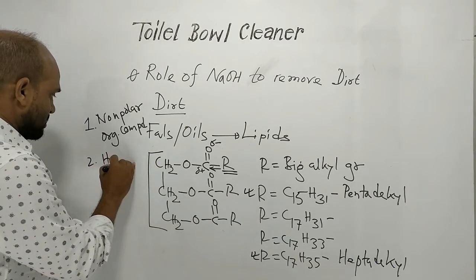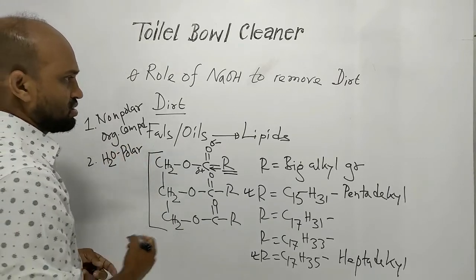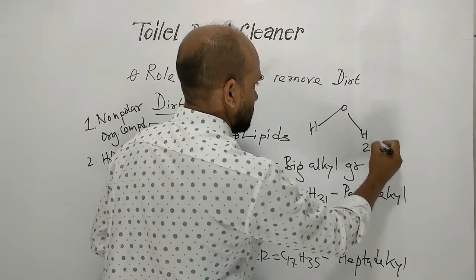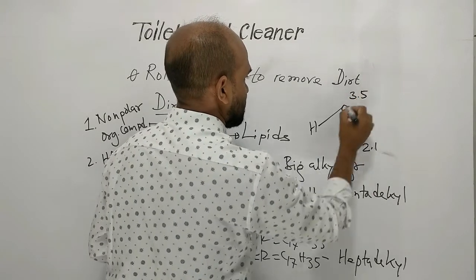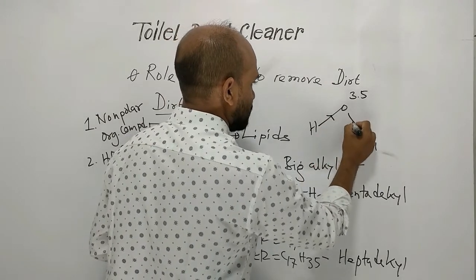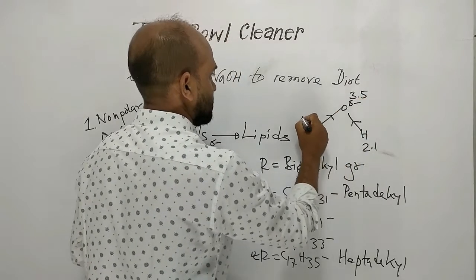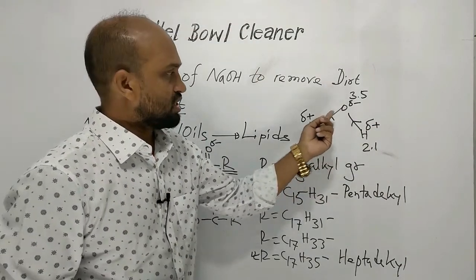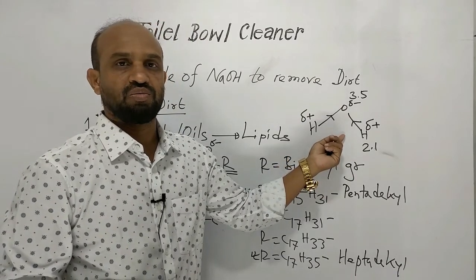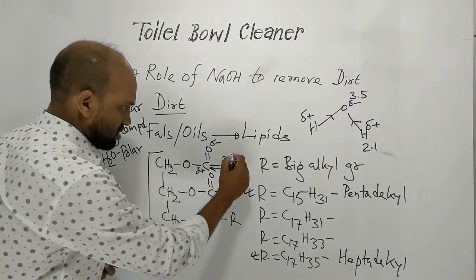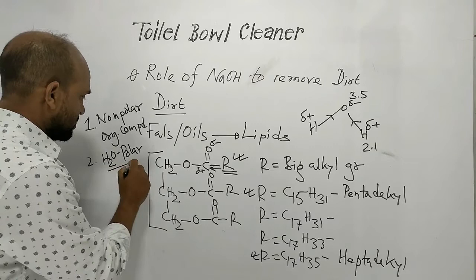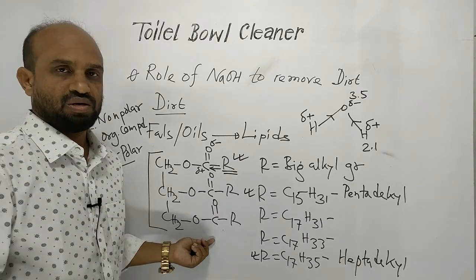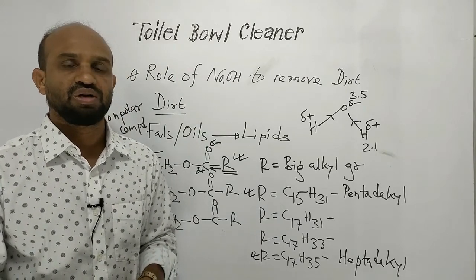Water is a polar compound. Hydrogen's electronegativity is 2.1 and oxygen's is 3.5, so the electron cloud moves toward oxygen — oxygen becomes negatively charged and hydrogen becomes positively charged. Because of this electronegativity difference, water molecules are polar. Since water is polar and lipid is non-polar, polar water cannot remove the non-polar lipid. That is why dirt cannot be removed by flowing water alone — we need toilet bowl cleaner.